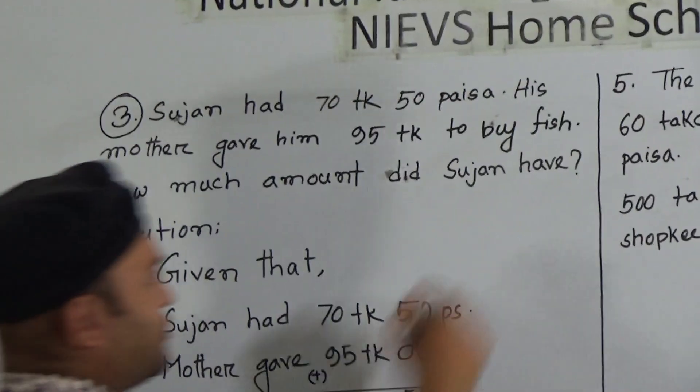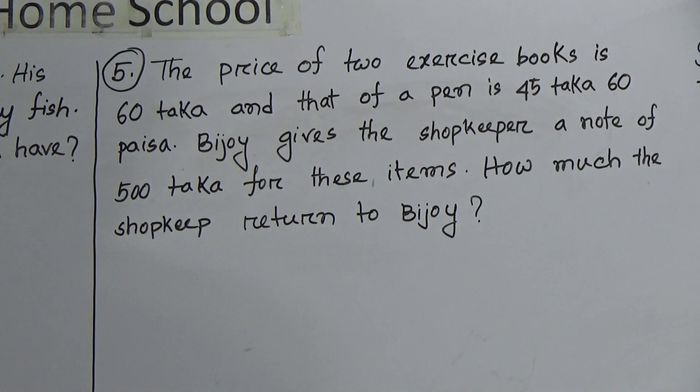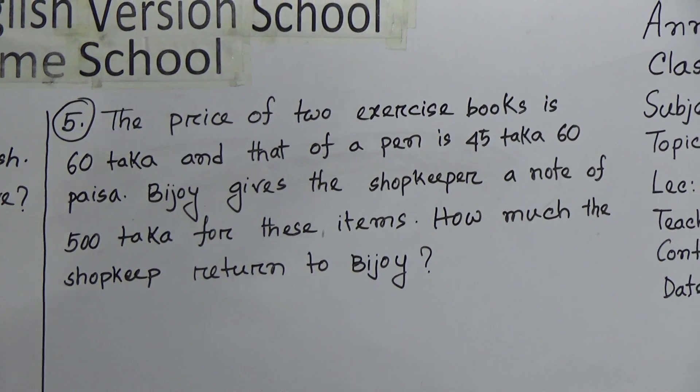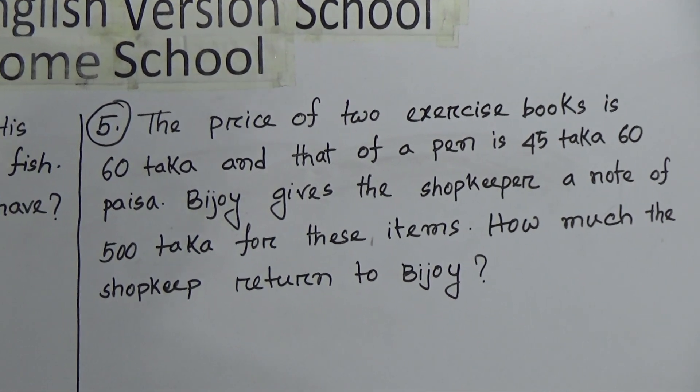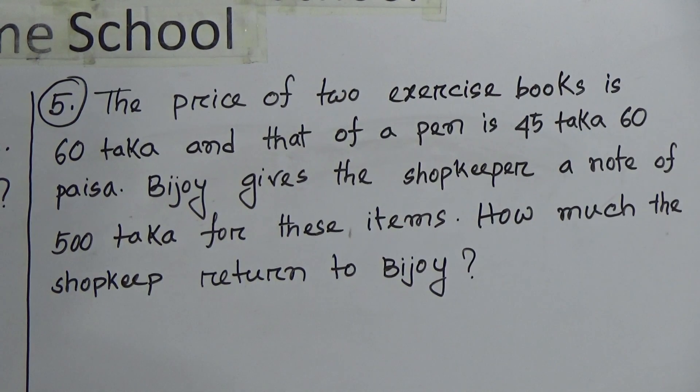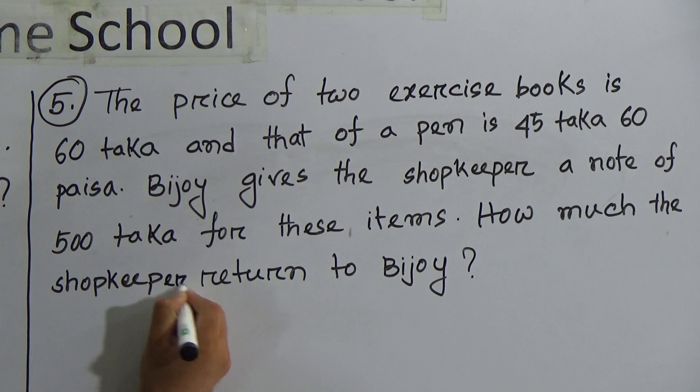Here is question number five. The price of two exercise books is 60 taka and that of a pen is 45 taka 60 poises. Bijoy gives the shopkeeper a note of 500 taka for these items. How much the shopkeeper return to Bijoy?